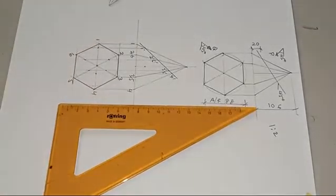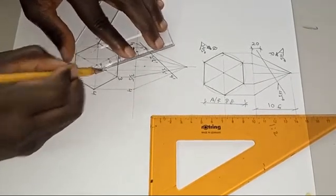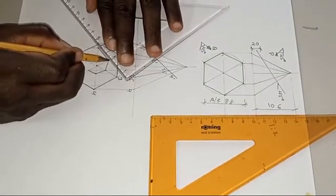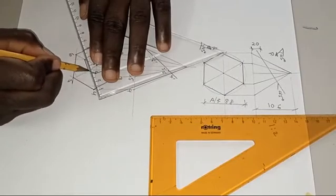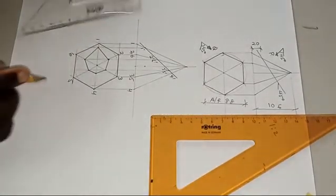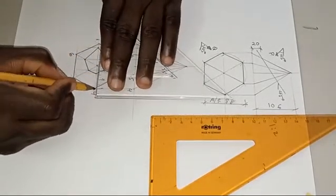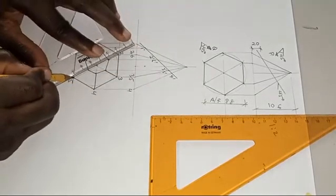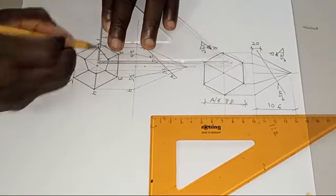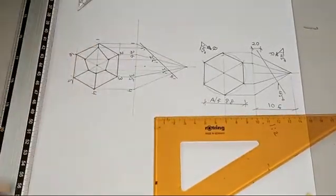You can now join with your ruler. We are not using French curve to join because it is a plane shape that all the sides are straight, it has edges not curved. Assuming it is a cone or a cylinder, that is when you join with French curve. So you can now thicken from here to here, very important. Thicken this one, this one, this one, this portion. Then in between you can shade the inside, but let us leave that for now.